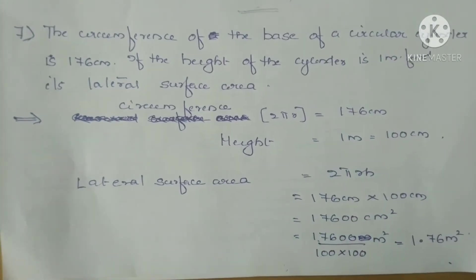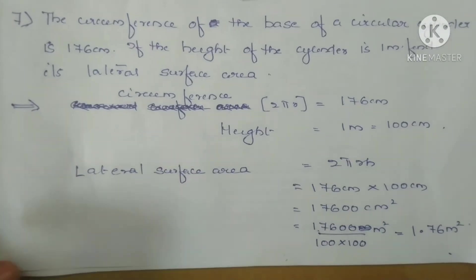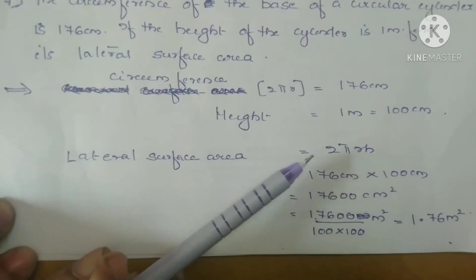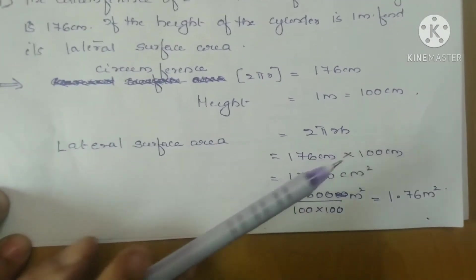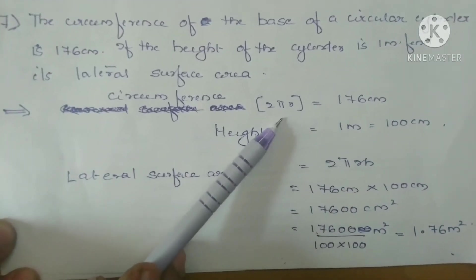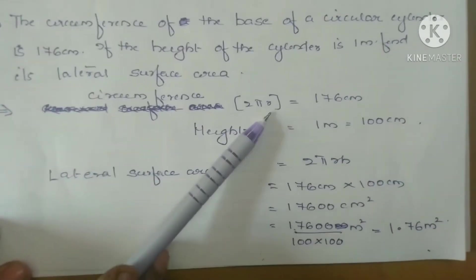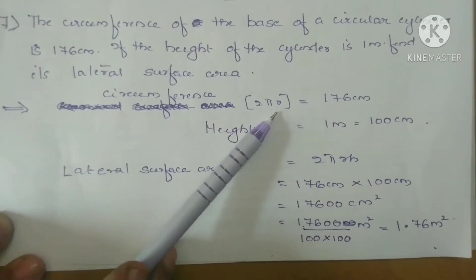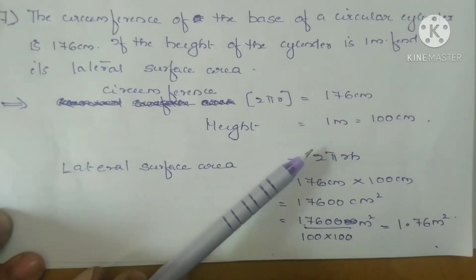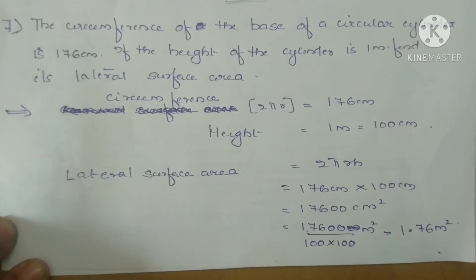Now, lateral surface area — we have to find out. What is the formula? Lateral surface area equals 2πrh. Look here: 2πr is already given in the question as 176. So no one needs to find out r separately — that is a wastage of time. Don't waste your time finding r, because 2πr is directly given.